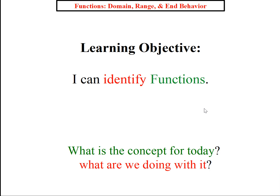Copy your objective in your Cornell notes, bottom left — you do need a prior model. It reads: I can identify functions. Today we're going to get into functions, but before I do, I'm going to clarify some vocabulary that we've been using and seeing from the beginning of the school year, just to refresh your memory.